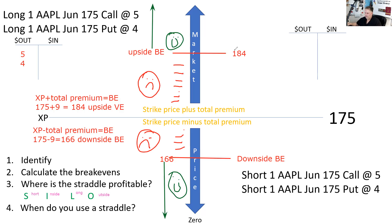Our last Score Four More item: when do we use a straddle? We buy a straddle when we're expecting volatility but the direction is uncertain. Here, I think Apple is either going to be above 184 or below 166 — I'm not sure if they're going to have a blowout quarter or not, but if they do, it'll move significantly up or down.